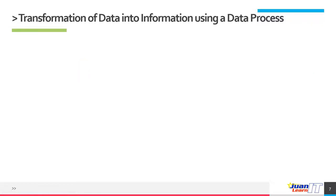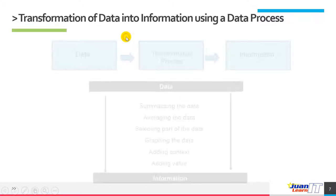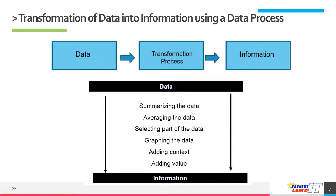Now let's talk about the transformation of data into information using a data process. Data is just a raw material for information — it doesn't mean anything. If you process this data, it becomes information and now has a meaning. The transformation process includes summarizing the data, averaging the data, selecting part of the data, graphing the data, adding context, and adding value. Any of these activities would lead to information.